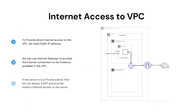Next topic is internet access to VPC. We will see the procedure to provide internet access to the VPC. First, we need to assign a public IP to our EC2 machine. Then we have to create an Internet Gateway and attach it to the VPC. We can attach only one Internet Gateway to the VPC. Then we can make changes in the route table to pass the traffic of the subnet to the Internet Gateway. Please refer to the image on the screen for the traffic flow.